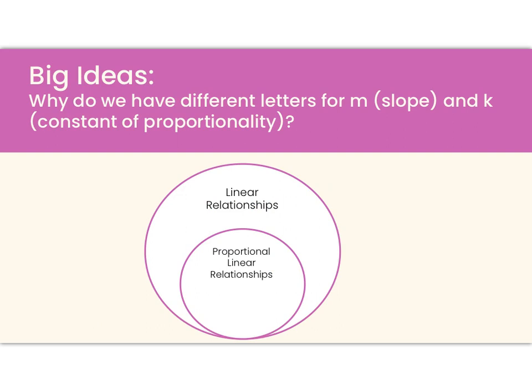So why do we have different letters for the slope and the constant of proportionality? It's because proportional linear relationships are really just a special type of linear relationship. It's kind of like how a pit bull is a type of dog. A proportional linear relationship is a type of linear relationship. It goes under that bigger umbrella, but they are two different ideas. And so for linear relationships, we have a slope, and we represent it using the letter m, and it's y2 minus y1 over x2 minus x1. It's our change in y over our change in x.